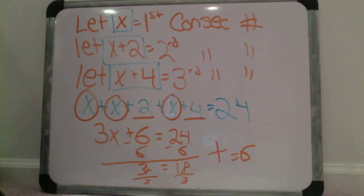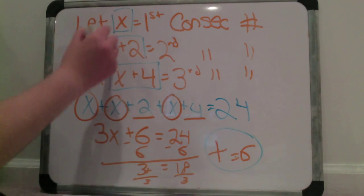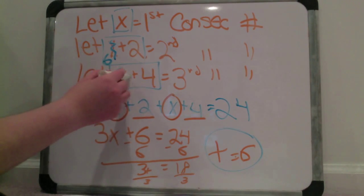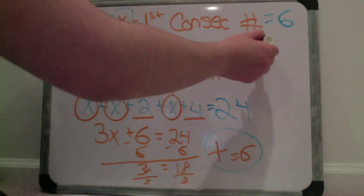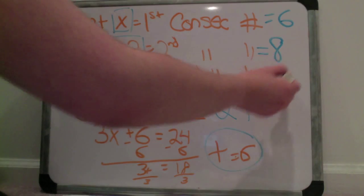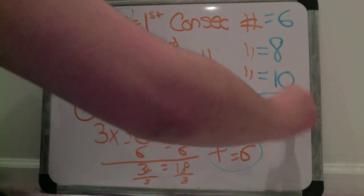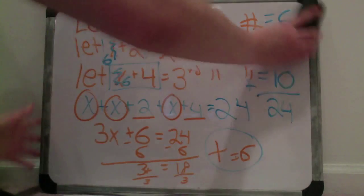Then we replace all the x's with 6. The first consecutive even integer is 6, the second one is 8, and the third one is 10. To check these we add them all together and get 24.